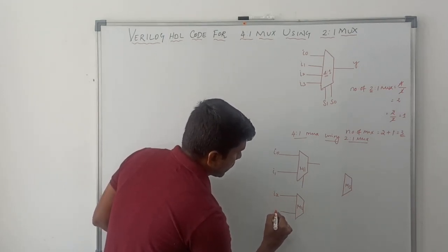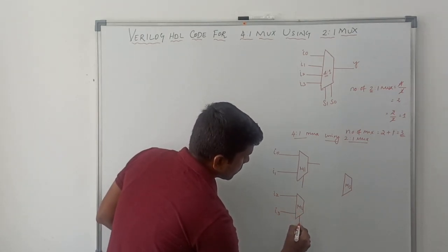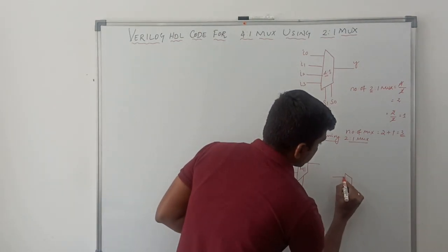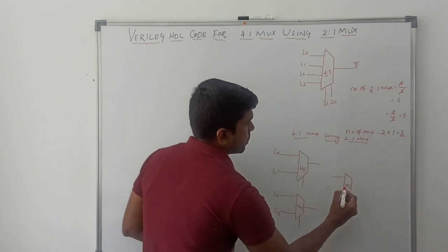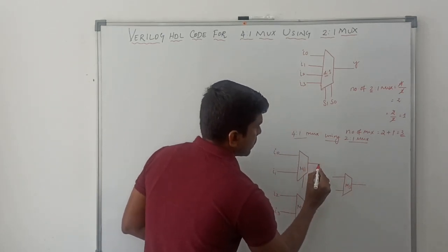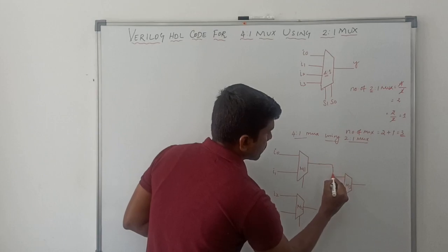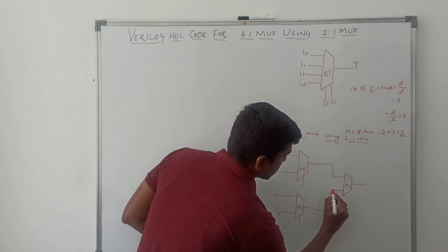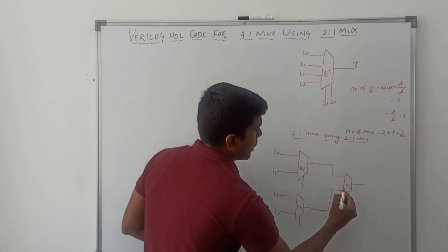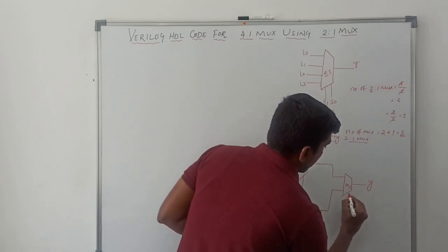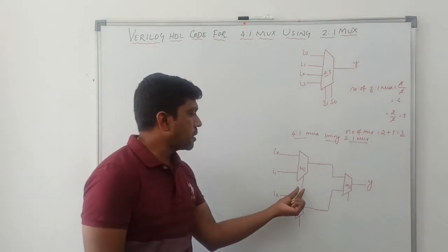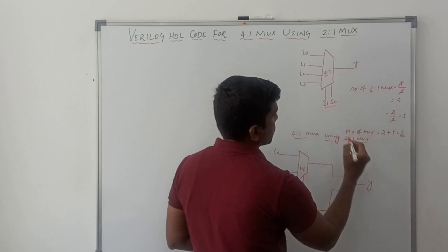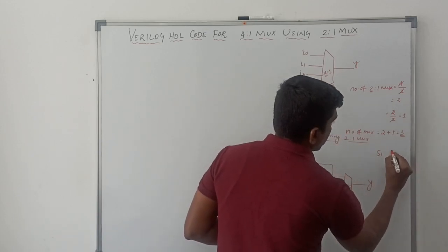Mux 2 inputs are I2 and I3. The output of the first mux M1 is connected to one input of M3. The output of the second mux M2 is connected to the second input of M3, and M3 provides the final output Y. Then we connect the selection lines. In this 4-to-1 mux, we have 2 selection lines: S1 and S0.